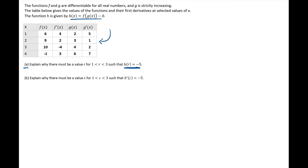When you are asked to find a value in an interval of the original function, the Intermediate Value Theorem should pop into your head. If you are asked to find some value — like we are asked to find negative 5 — on an interval, the Intermediate Value Theorem is what you want to use.